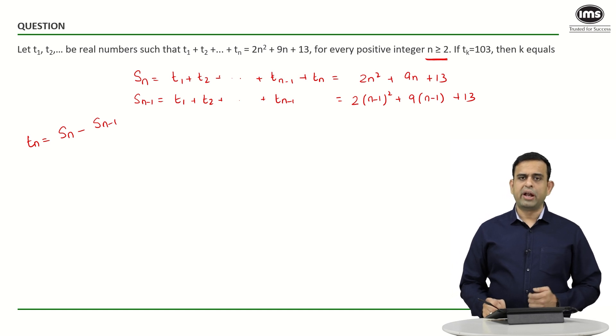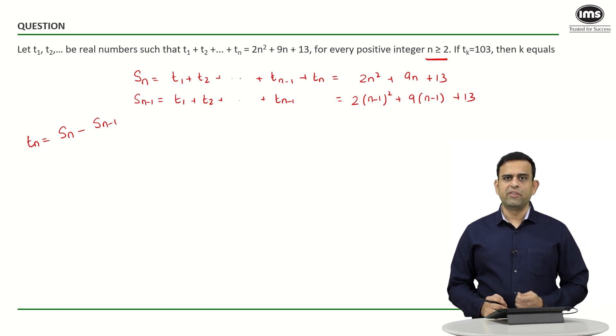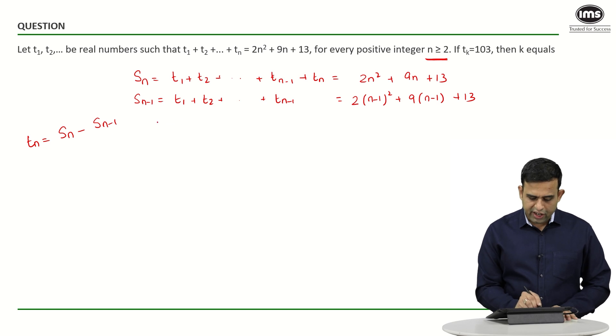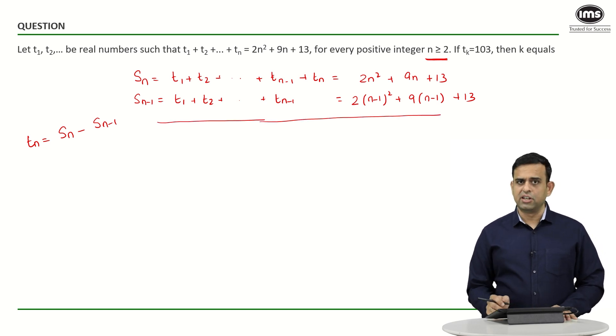And if you can see, my terms t₁, t₂ all the way up to t_(n-1) are common in both the series. So if I subtract, they will get cancelled out.